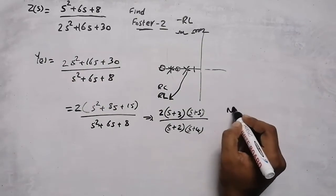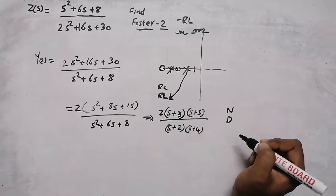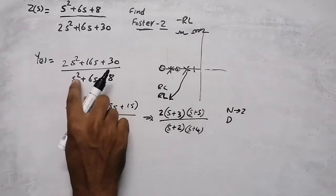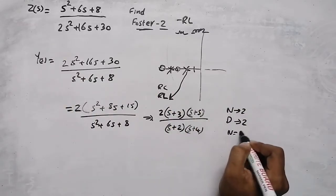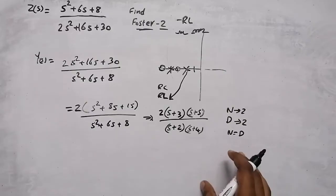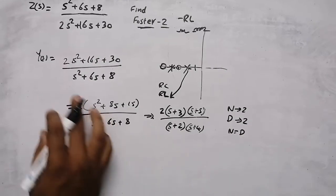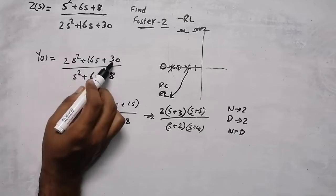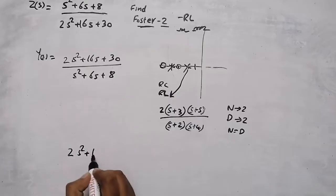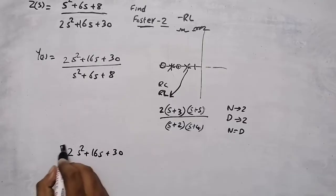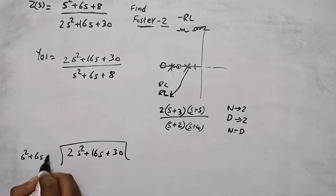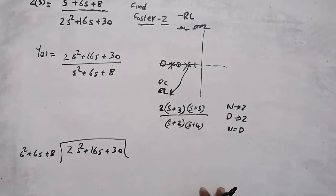Before doing partial fractions, we need to check the degree of numerator and denominator. Here both the numerator and denominator have degree 2, so we cannot directly do partial fractions — we must first do long division. Take the numerator 2s² + 16s + 30 divided by the denominator s² + 6s + 8.